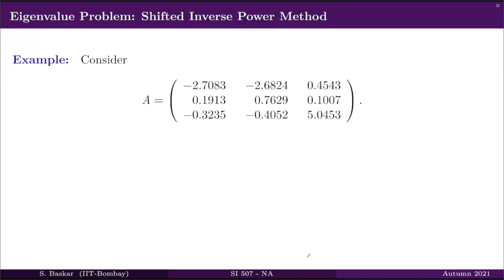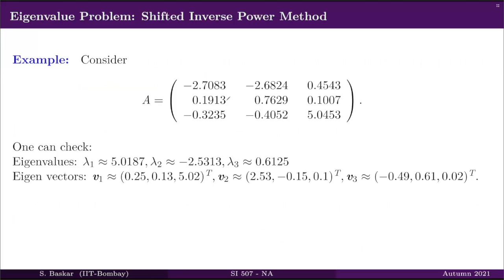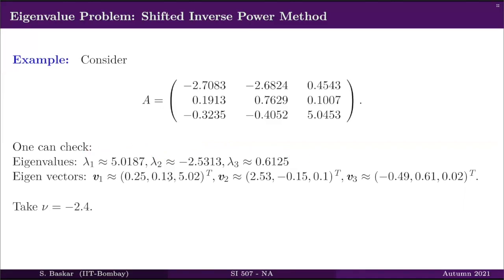Let us take an example where we look at the eigenvalues for convenience. In an exam, note that I may say 'without using eigenvalues,' in which case you would need to use the Gershgorin theorem. Here, I comfortably used the eigenvalues and chose nu so that the shifted inverse power method converges to lambda_2. I chose nu = -2.4. In practical life, we do not know the eigenvalues, so the Gershgorin theorem is the practical tool.